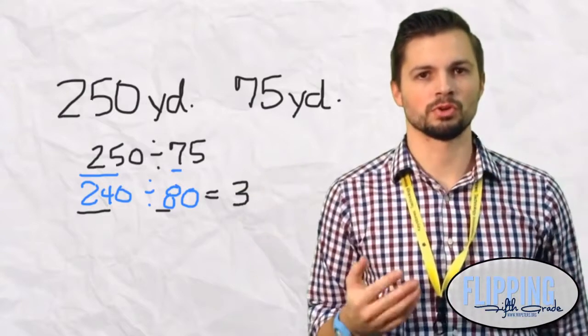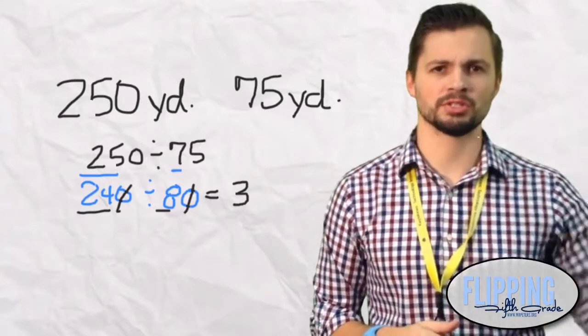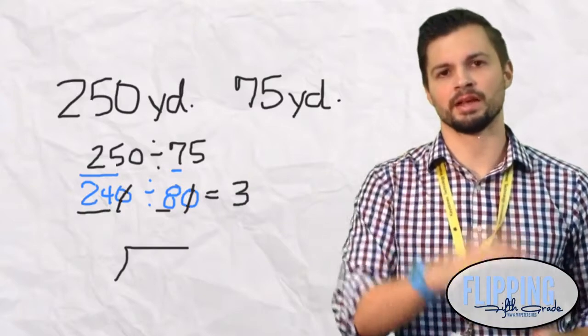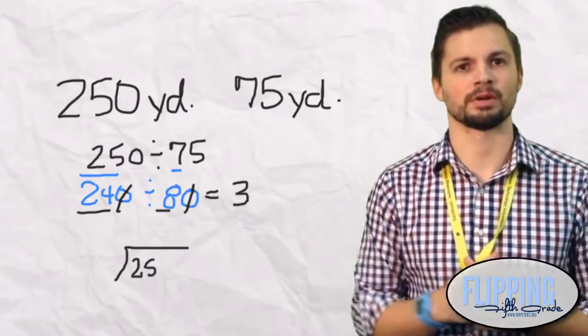Now both the zeros will cross out. You may say, well why did we do that? We just did that in the last lesson. That is going to help us with the actual problem. Here comes the real problem.